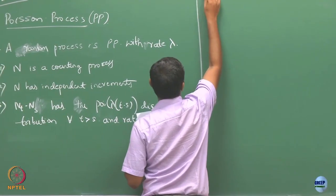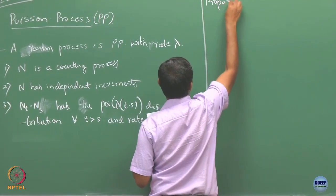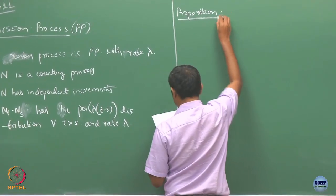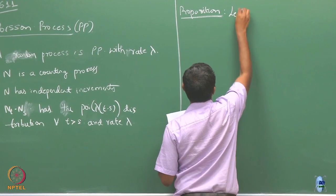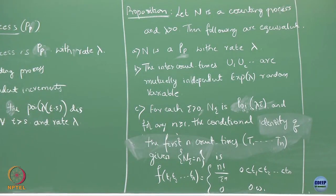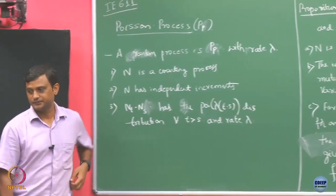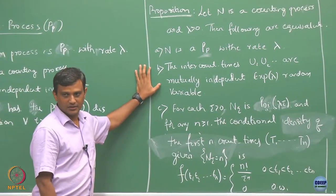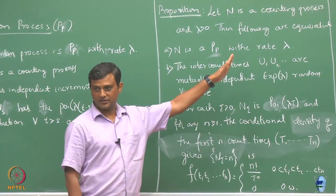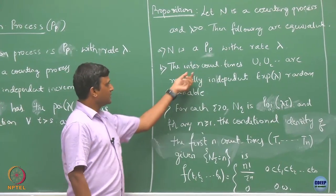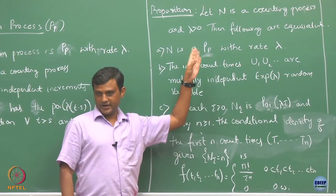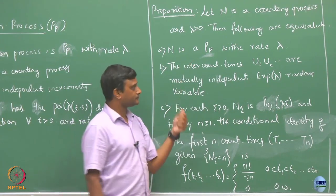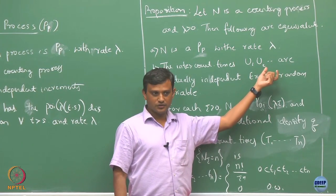Today we are going to see the following properties. A random process N is said to be a Poisson process, and now we are saying it has other equivalent characterizations. You can say N is a Poisson process with rate lambda — that is equivalent to saying that the intercount times u1, u2... Remember, we have already defined what we mean by intercount times: the time elapsed between two counts, denoted as random variables u1, u2.